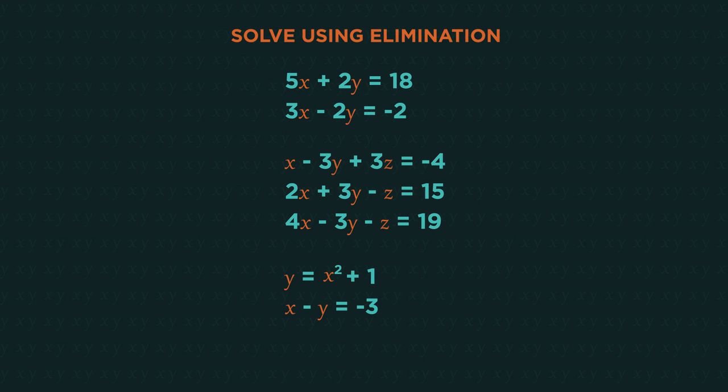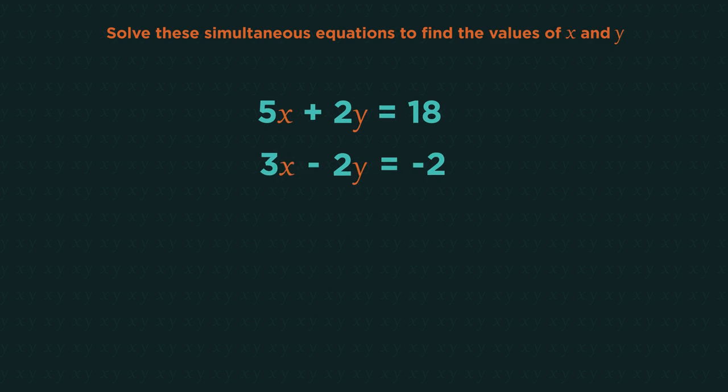Solving simultaneous equations by elimination only works when we have linear equations. So equations that look like this, with an x and a y, no x squareds or y squareds. Let's get started with an example.